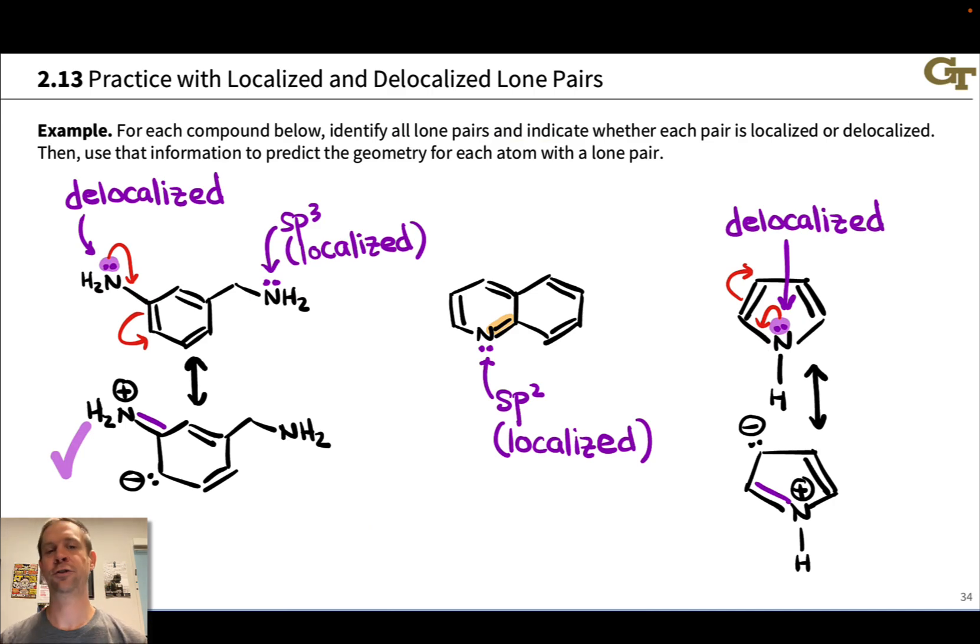And again, just to drive this point home one more time, why do we care about this? These lone pairs are very different. These pairs of electrons are very different in terms of their reactivity. This pair, and especially this pair, are not basic at all. It's very difficult for these molecules to give these pairs of electrons away. Much easier to give away this pair of electrons, or this pair, which are localized, and therefore not as stable as the lone pairs engaging in resonance delocalization.